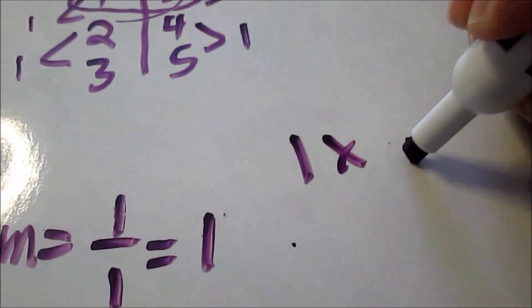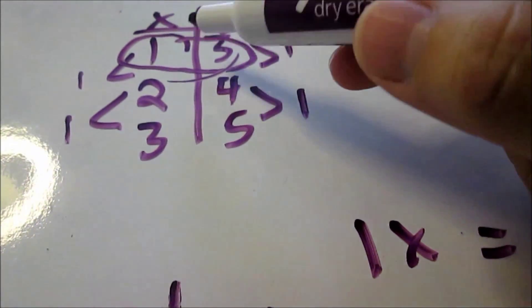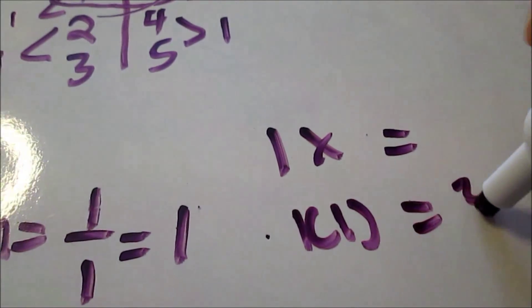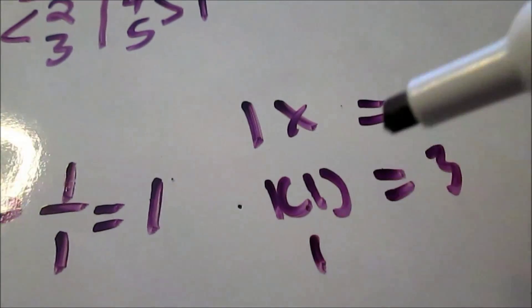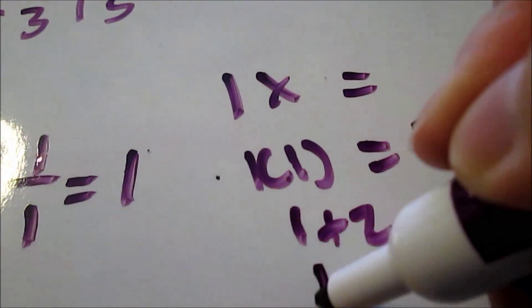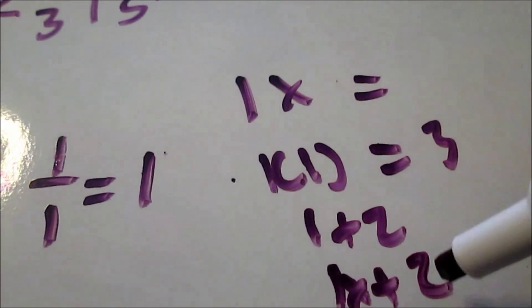I use one, I need to get to three. So, when I put in one, I need to get to three. One times one is one. To get to three, I have to add two. So, the rule is going to be one x plus two.